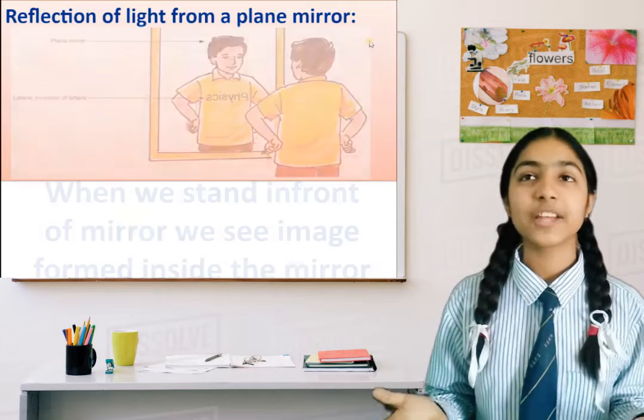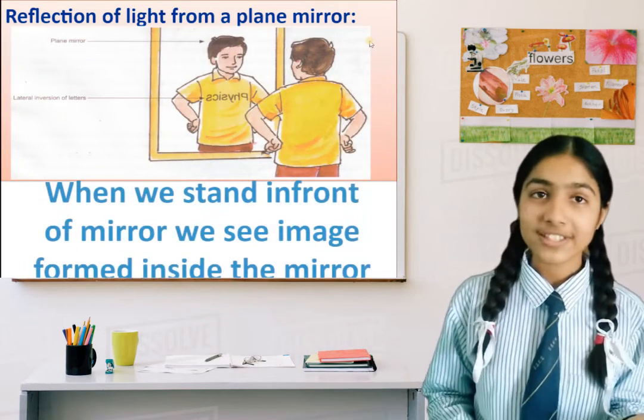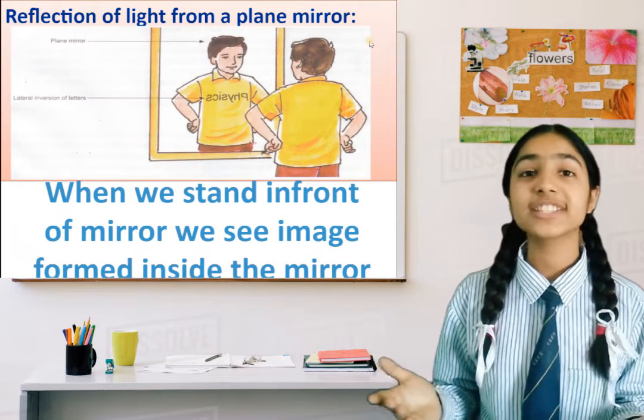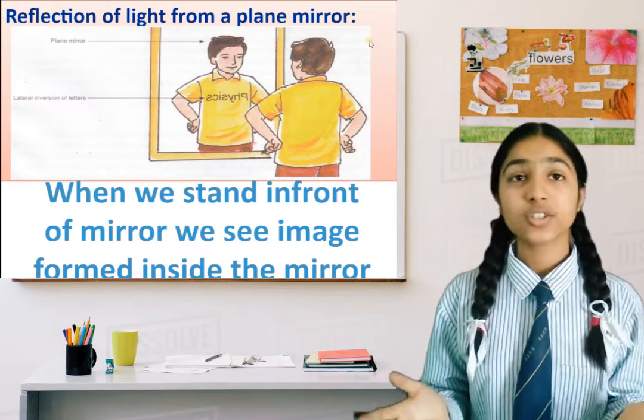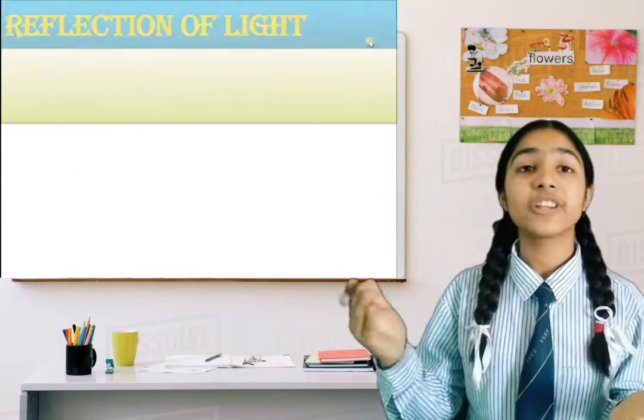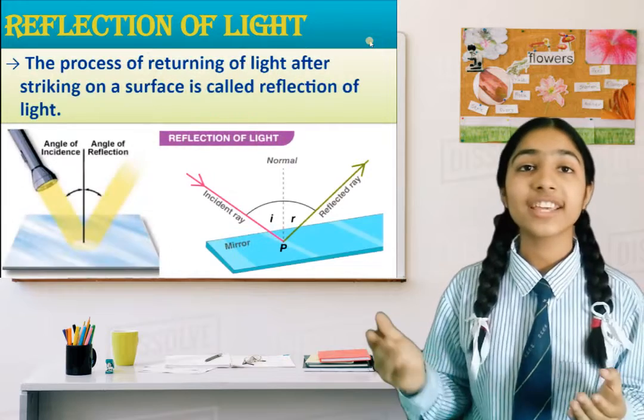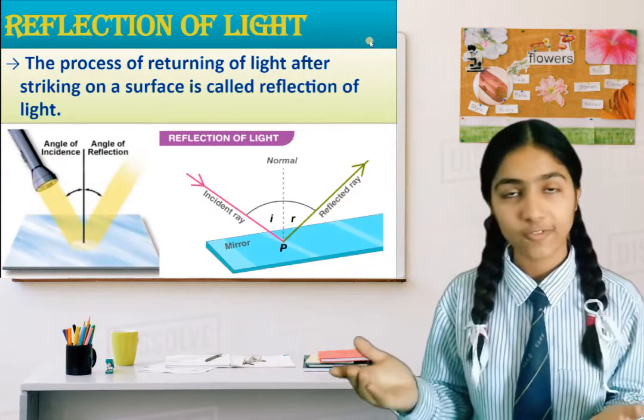Now, reflection of light from a plane mirror. When we stand in front of a mirror, we see an image formed inside the mirror. So what is reflection of light? The phenomenon of returning of light after striking a surface is called reflection of light.